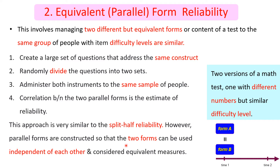This involves administering two different but equivalent forms or content of a test to the same group of people, where the item difficulty levels are similar. The two equivalent forms are provided to the same group of respondents and their difficulty levels should be similar.